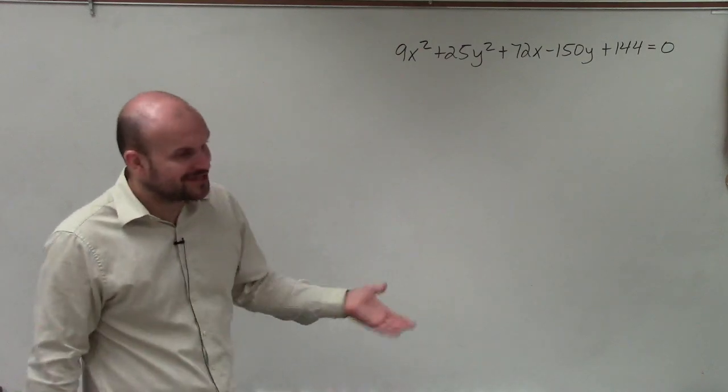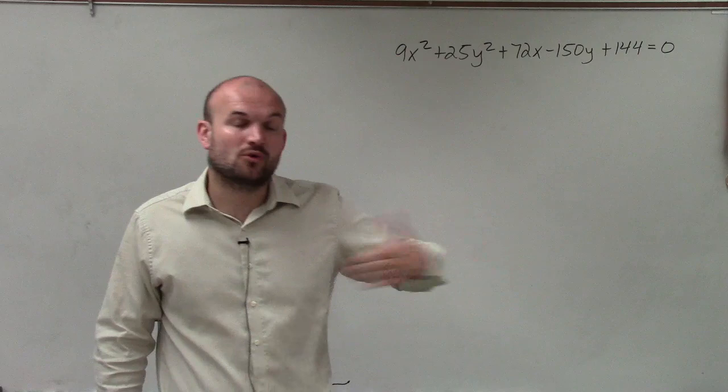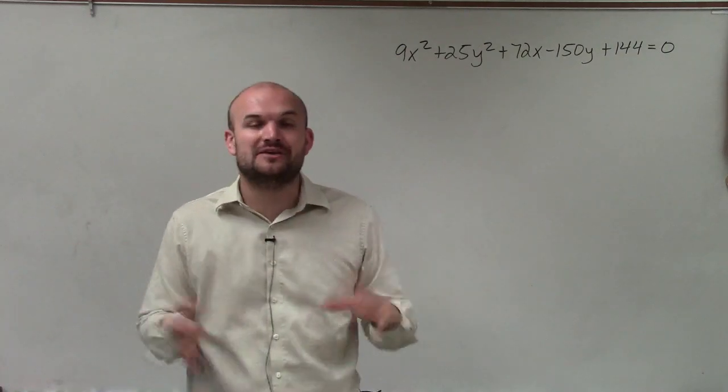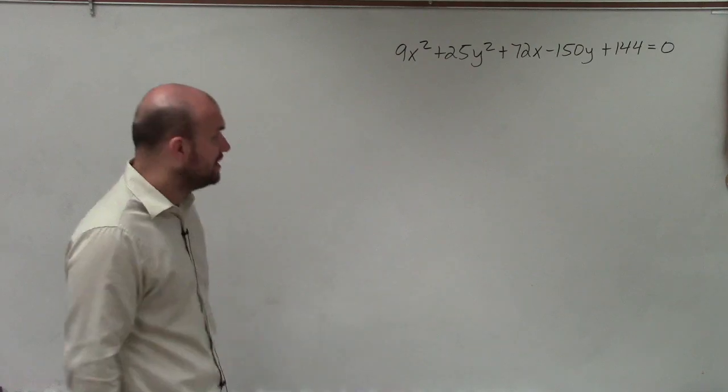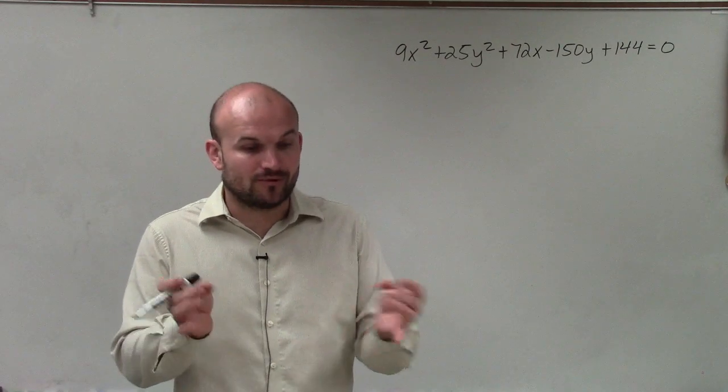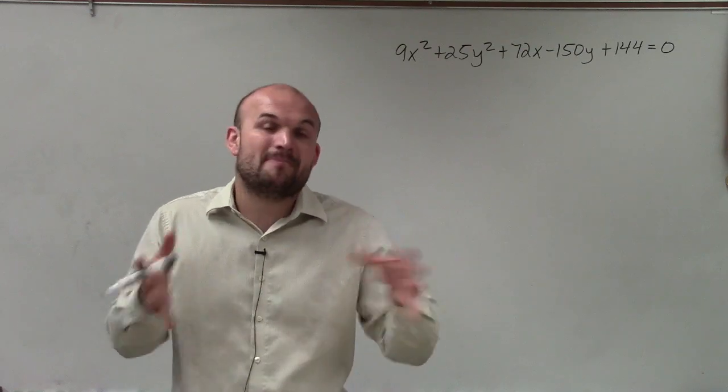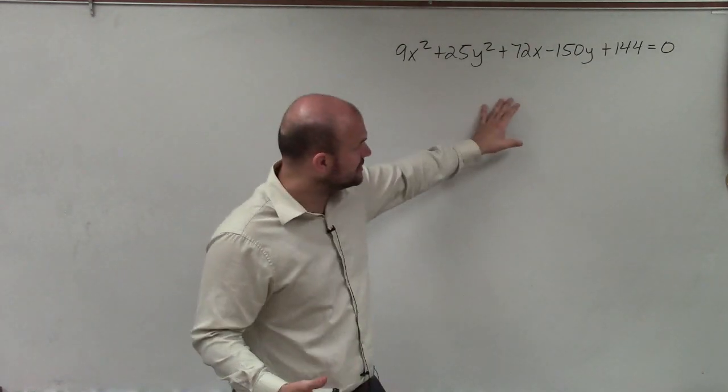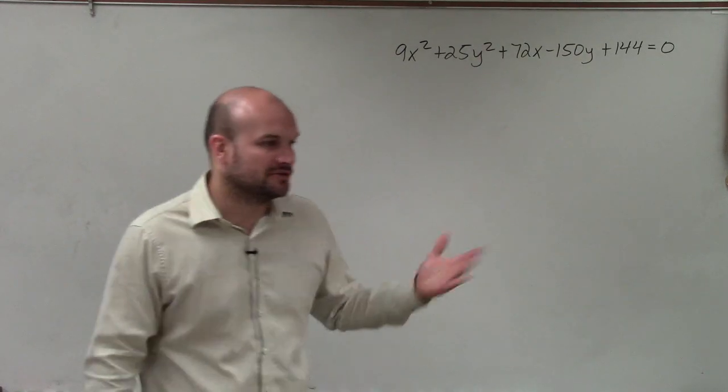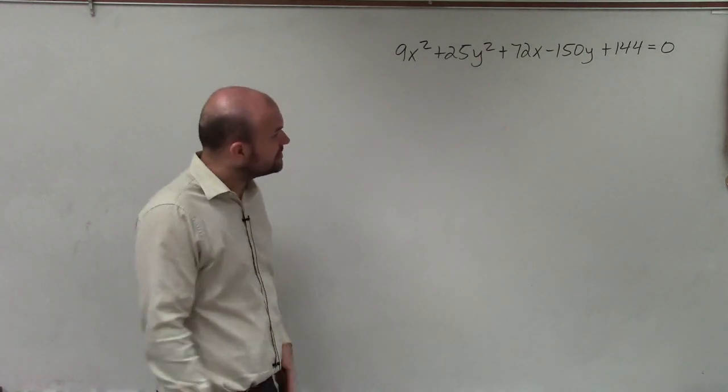When we write it in standard form, we can identify if the major axis is horizontal or vertical. Once we know that, we can start identifying those values and that's going to help us graph it. Our standard form is x minus h squared, y minus k squared. Those are binomial squared. So I need to take this equation and rewrite it as binomial squared, divided by the a squared and the b squared.